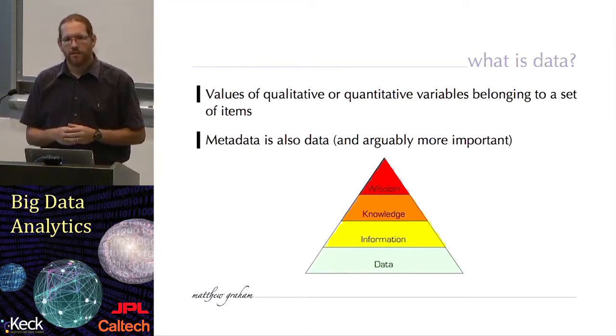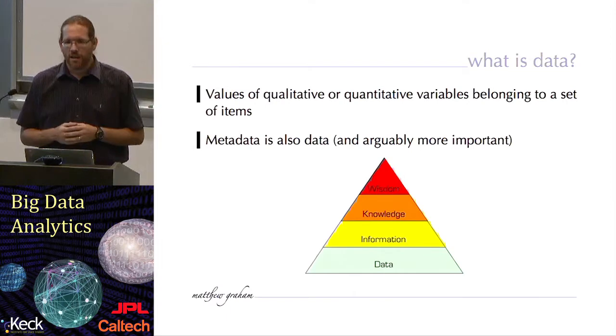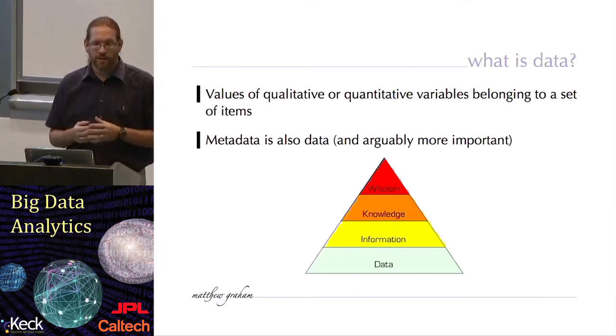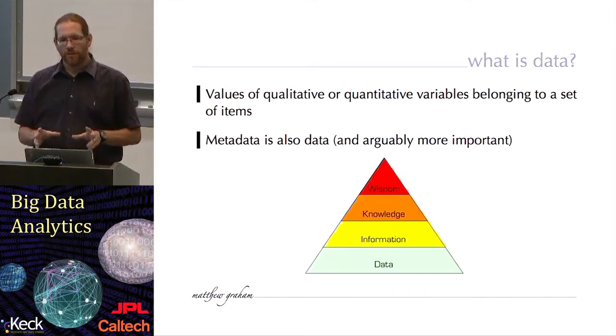If I was taking data at a telescope, the metadata might be the instrumental settings, or the weather conditions, or the quality of the night, that sort of thing. It's a set of data that is about the actual binary data, the imaging data, or the spectroscopy data that's being taken by the telescope, but it is constant for all the images that I might take in a night.